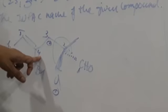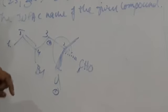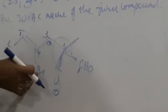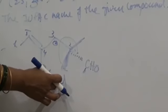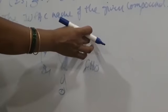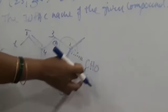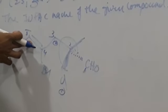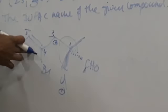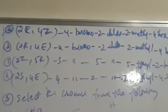So for position 4, Z notation. So 2R and 4Z — Z, 4-Chloro. The second position also has a methyl group, and the fourth carbon has unsaturation, so 4-hexenol. So the answer is A — 2R, 4Z, 4-chloro, 2-methyl, 4-hexenol.